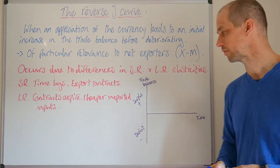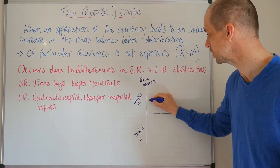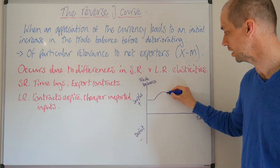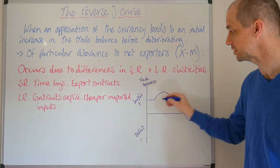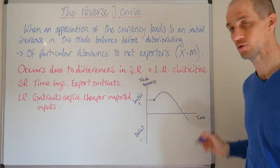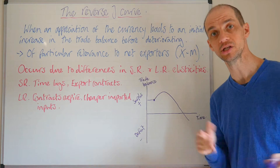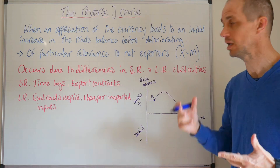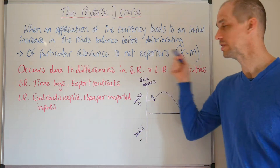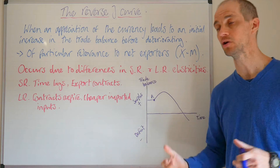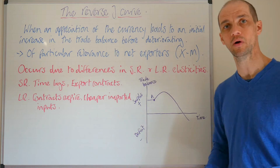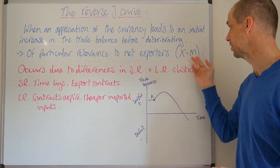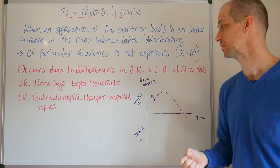It has much the same sort of implications, but in this case we are moving from a position of trade surplus to an improvement and then a consequent worsening or deterioration of the trade balance. Now as such, this is particularly relevant for net exporters, i.e. countries that generate far more in export value and volumes than they do when it comes to actual import values.